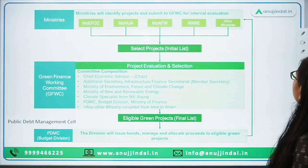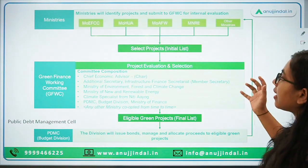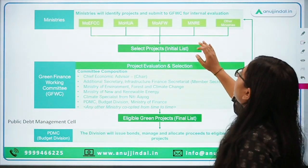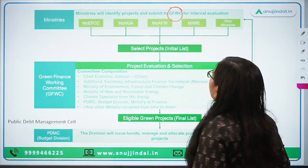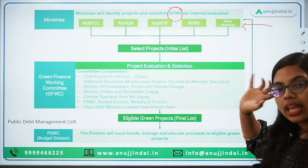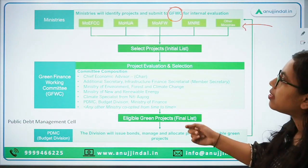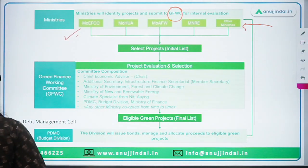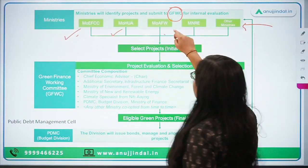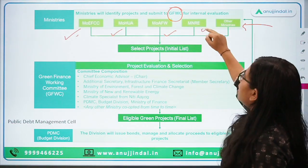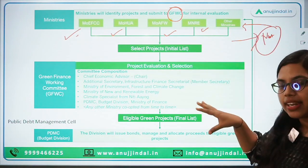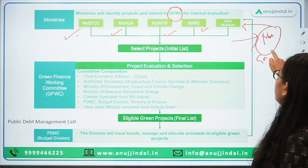This is the entire framework for how projects get selected. Ministries will identify projects and submit them to the Green Finance Working Committee for internal evaluation. Participating ministries include the Ministry of Environment, Forest and Climate Change; Ministry of Housing and Urban Affairs; Ministry of Agriculture and Farmers Welfare; and the Ministry of New and Renewable Energy. Their full forms are available online and are important from a general awareness perspective.